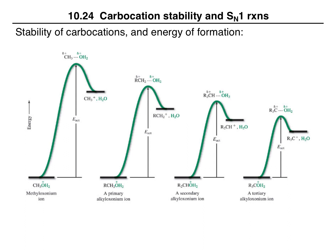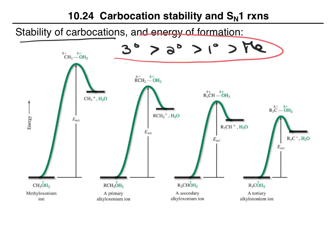As we saw in the last video, in terms of stability of carbocations, tertiary carbocations are more stable than secondary carbocations, which are more stable than primary, which are more stable than methyl carbocations. What we have here is basically four different energy diagrams, and we're looking at a protonated alcohol losing water to become a carbocation, and this information about the relative stability is reflected here.